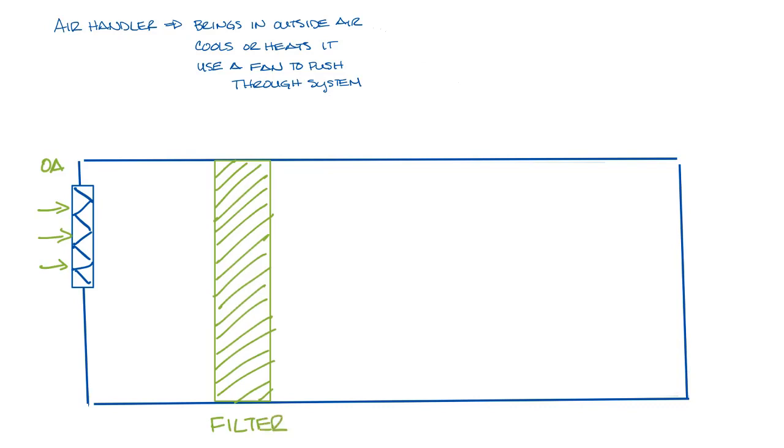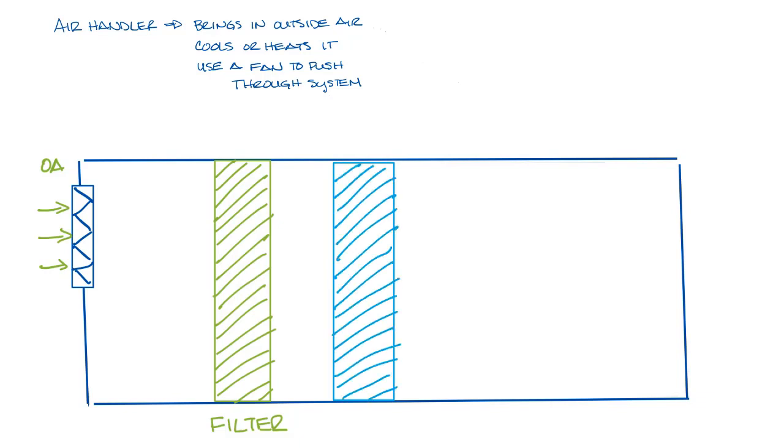The next thing the air will pass through are cooling and heating coils. The cooling coil cools down the air and dehumidifies and the heating coil warms up the air.